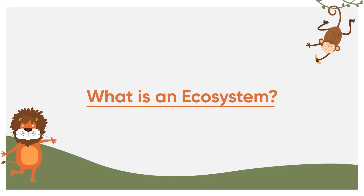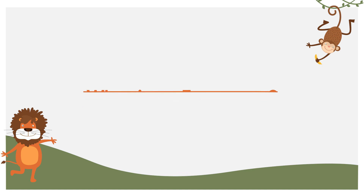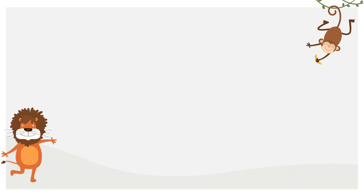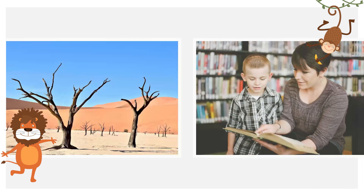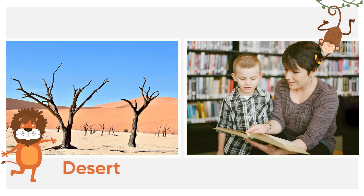What is an ecosystem? Well, an ecosystem is a group of living and non-living things that link together like a chain to create a certain environment. It could be as big as a desert, or it could be as small as your classroom.